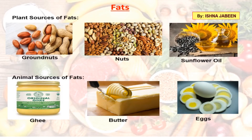Fats also give us energy. Fats give much more energy compared to the same amount of carbohydrates. Foods containing fats and carbohydrates are also called energy-giving foods. Eating too much fat-rich food can cause obesity. Plant sources of fats include groundnuts, nuts, and sunflower oil. Animal sources include ghee, butter, and egg.